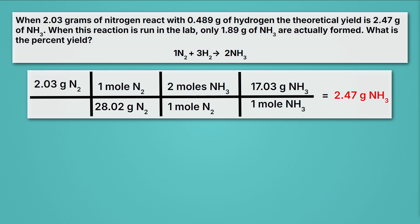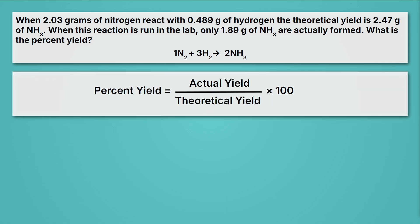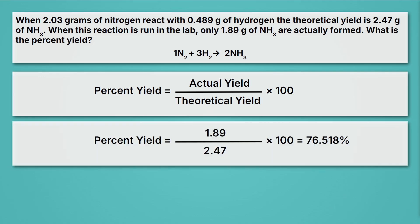Meanwhile, the 2.47 grams, that's what we call our theoretical yield. That's what we would get if everything went perfect. And we can calculate percent yield with this equation: actual yield divided by theoretical yield times 100. So pause the video and see if you can calculate the percent yield. Did you get it? It should have been 76.518%. In a second, we'll round here for sig figs. So notice that we've calculated percent yield by plugging in the actual yield of 1.89 and dividing by 2.47. When we multiply that by 100, we get 76.518%. And technically we should round that to 3 sig figs and get 76.5% because our actual and theoretical yield only have 3 sig figs.